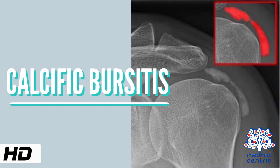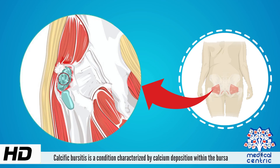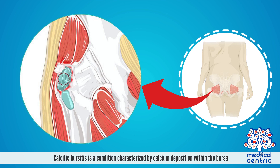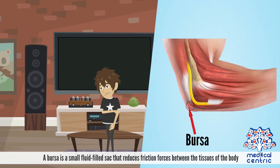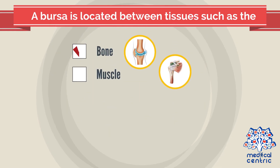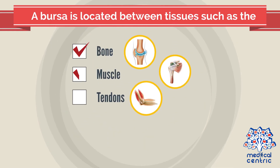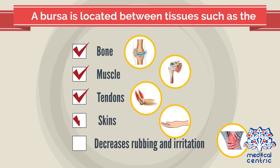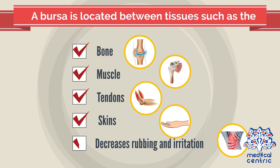Today's topic is calcific bursitis. Calcific bursitis is a condition characterized by calcium deposition within the bursa. A bursa is a small fluid-filled sac that reduces friction forces between the tissues of the body. A bursa is located between tissues such as the bone, muscle, tendons, and skin, and decreases rubbing and irritation.